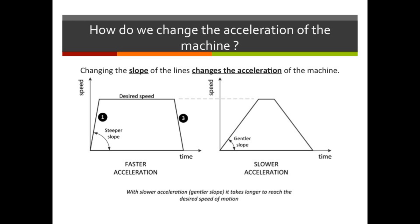Trapezoidal velocity profiles are almost always symmetric. Therefore, the slope of the deceleration line, which is line three, is adjusted to match the slope of the acceleration line.